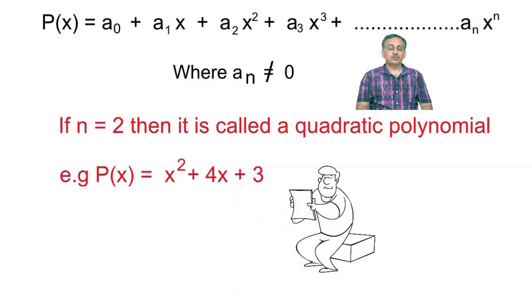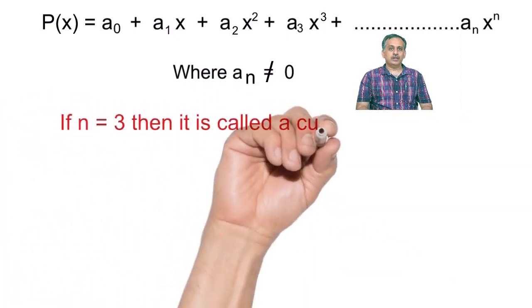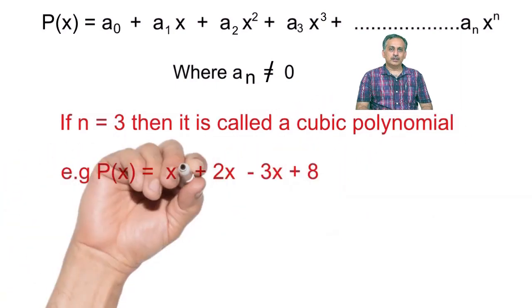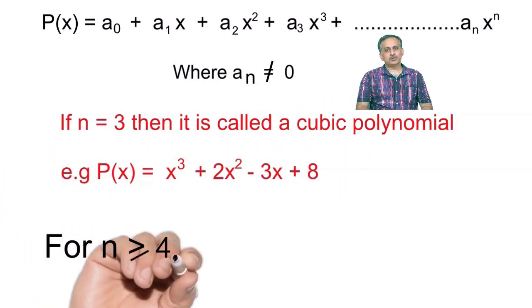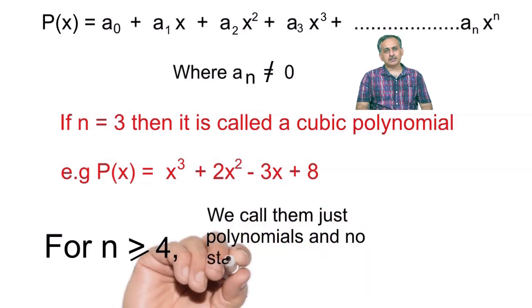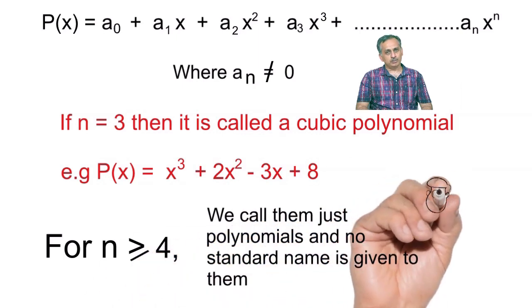If n is equal to 3 then it is called a cubic polynomial. For example, x cube plus 2x square minus 3x plus 8 is a cubic polynomial.